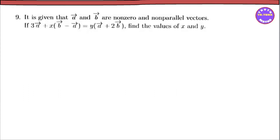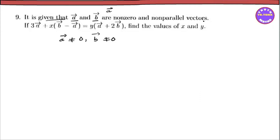Hello. This is number 9.1. It is given that a vector and b vector are non-zero — meaning a vector and b vector will not equal zero — and non-parallel, meaning a vector is not parallel to b vector.